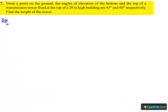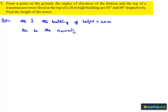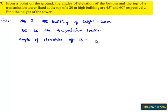Now moving on to the solution. Let us assume that AB is the building of height 20 meters. There is a transmission tower on the top of the building, that is BC. The base of the transmission tower will be point B because it is the top of the building. The angle of elevation of the bottom of the tower, that is point B, is alpha, which is equal to 45 degrees.